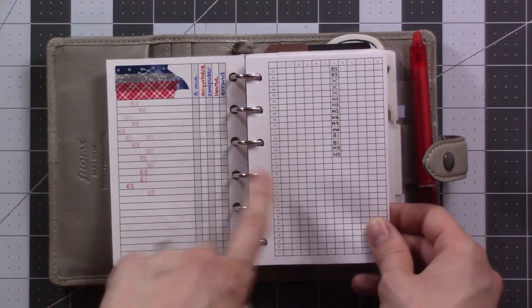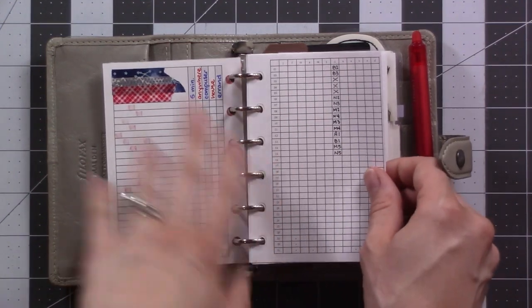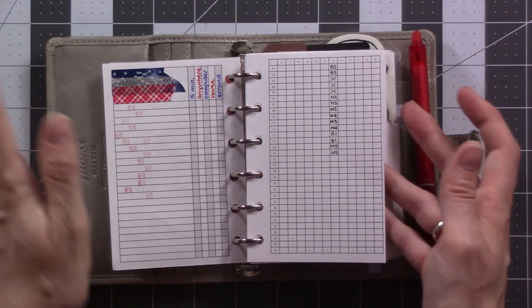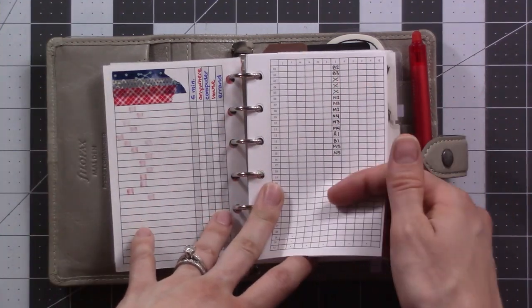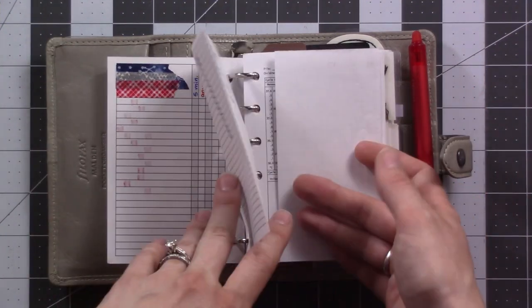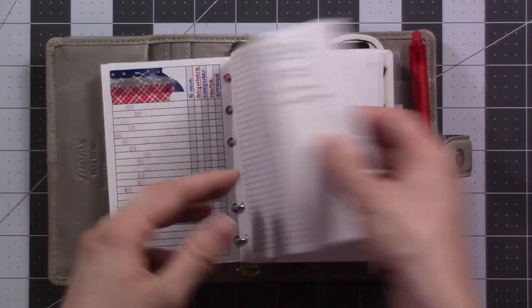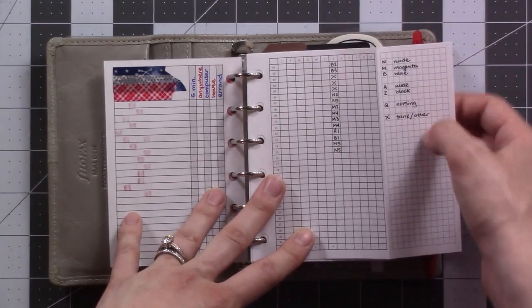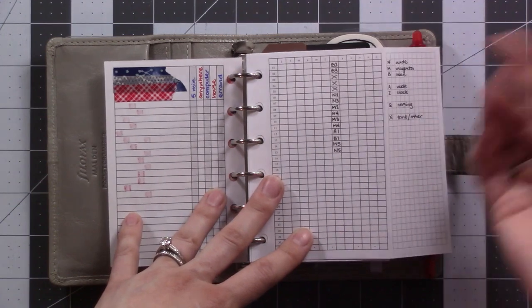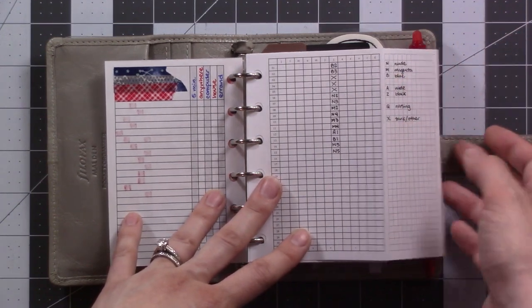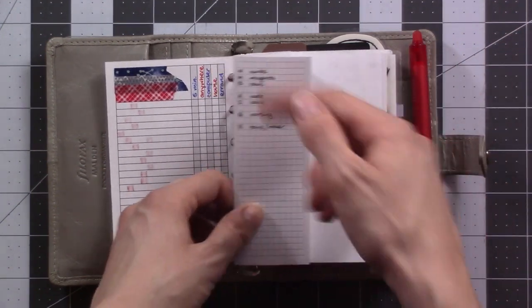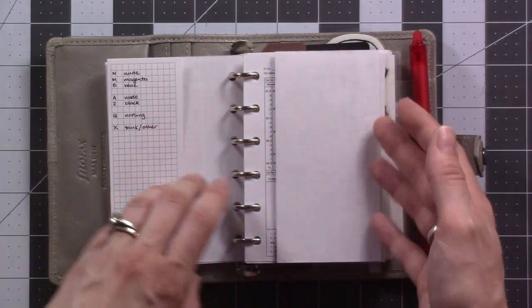Then I've got my bra tracker. I promised I was going to do a full video on this. I don't know if it'll be this month, next month, someday there will be a video, but basically I just track which bras I'm wearing so that I know when to wash them. And this is the, what's it called? You know, where I list what each symbol means because I'm using like more bras in rotation than I used to.